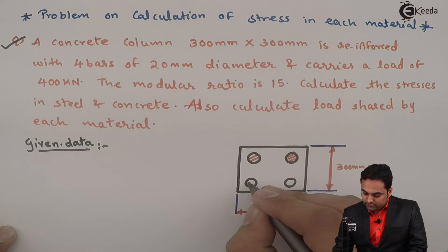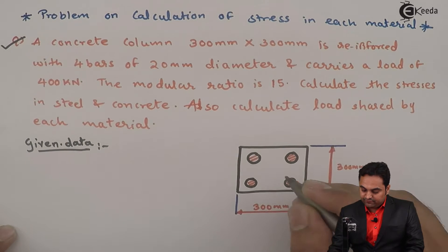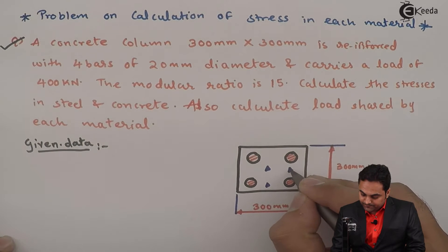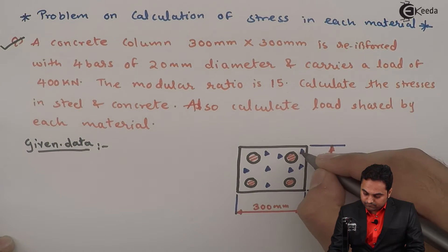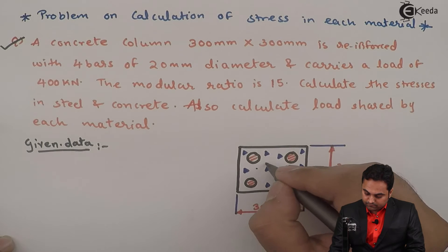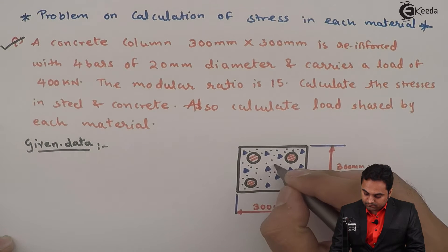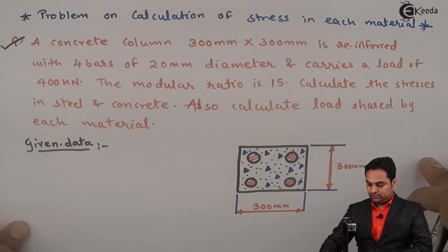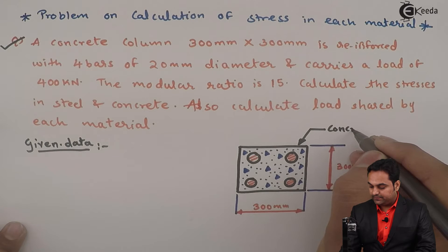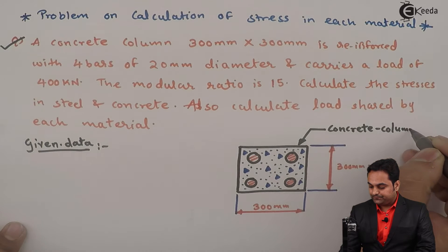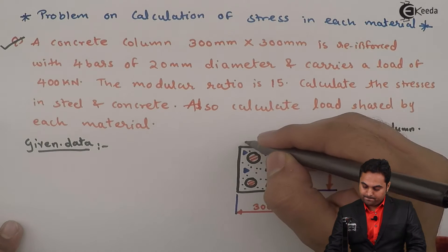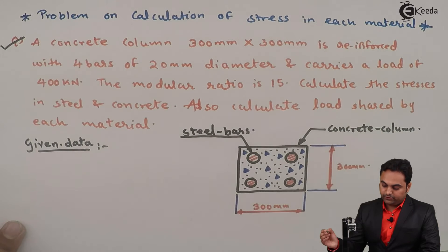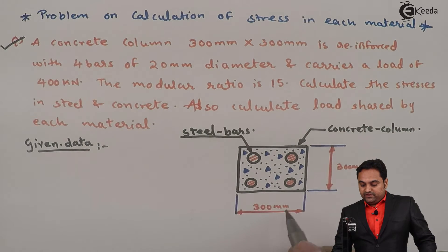These are the four steel bars used to reinforce the concrete, and here we have concrete — I will draw the symbol for that. So here is the diagram in which we have a concrete column and it has four steel bars, also referred to as steel rods.